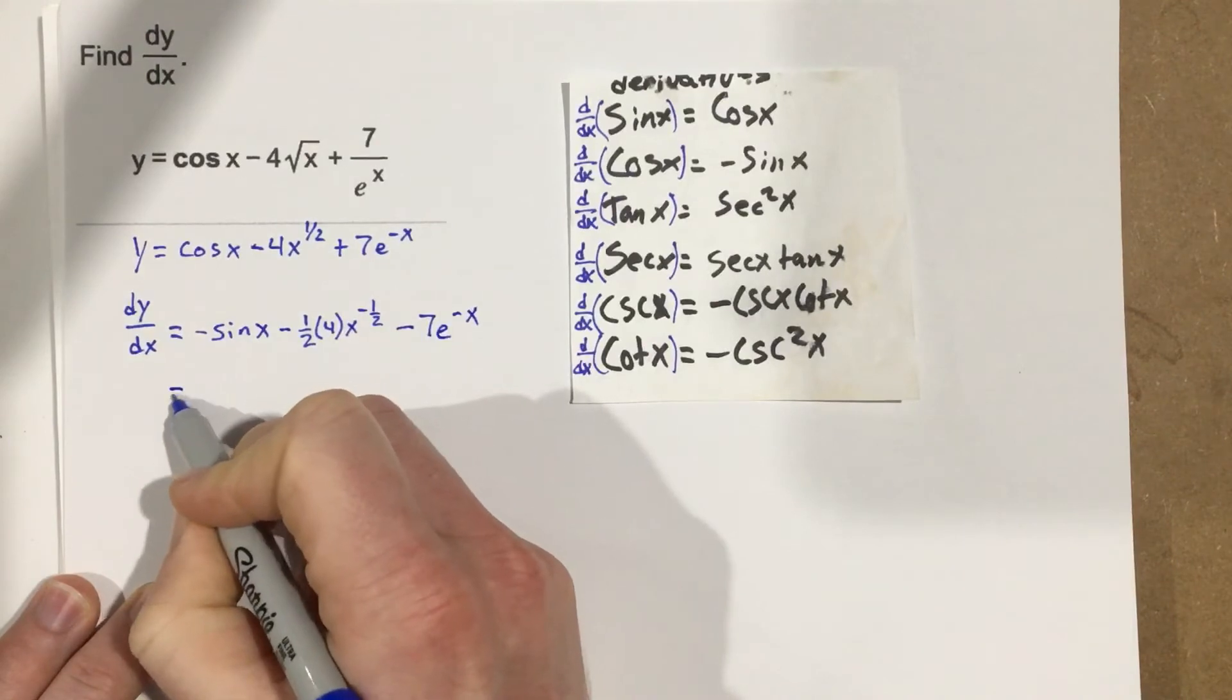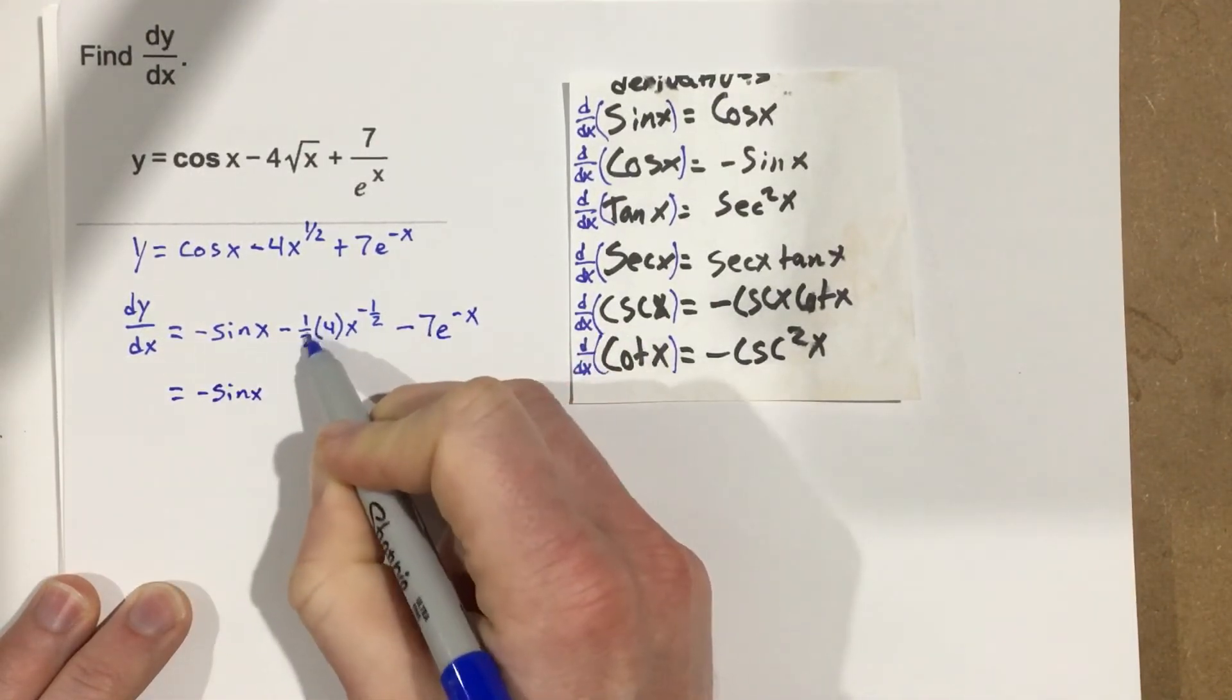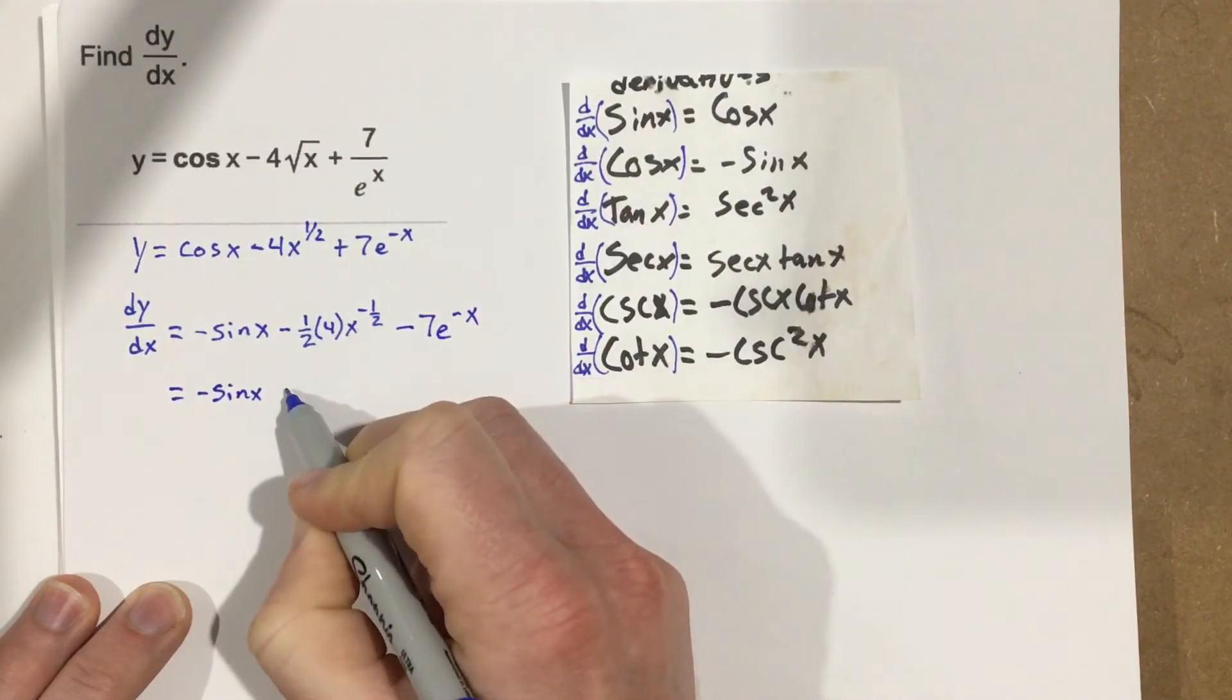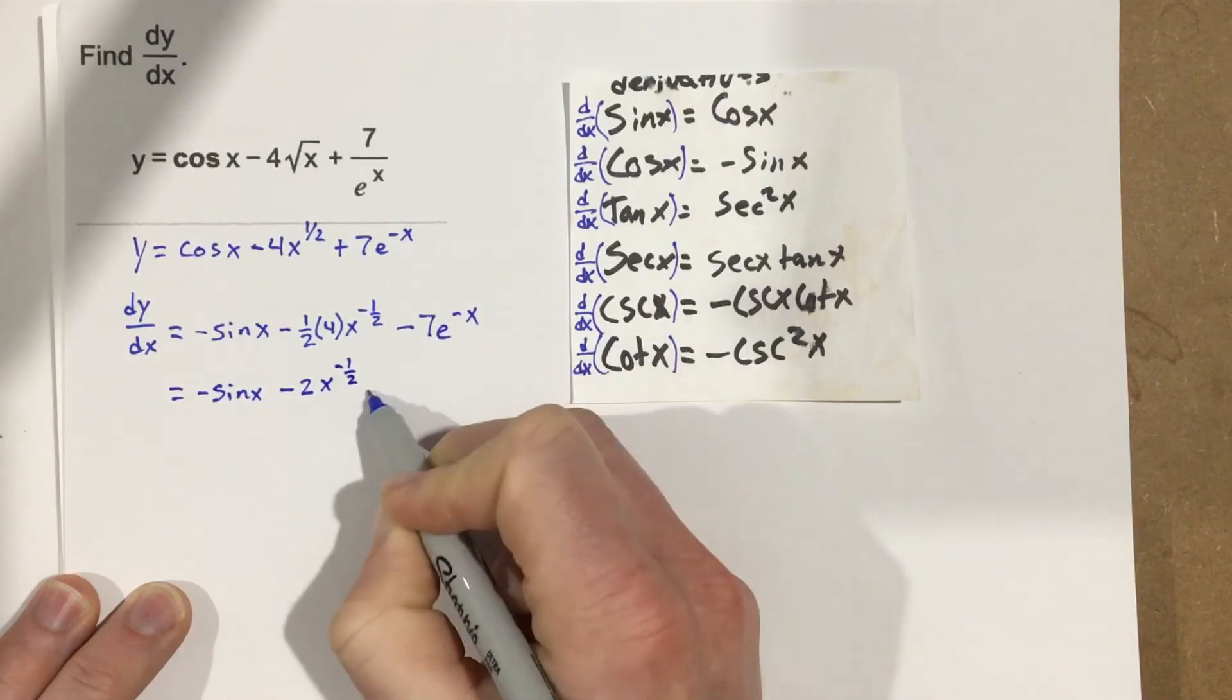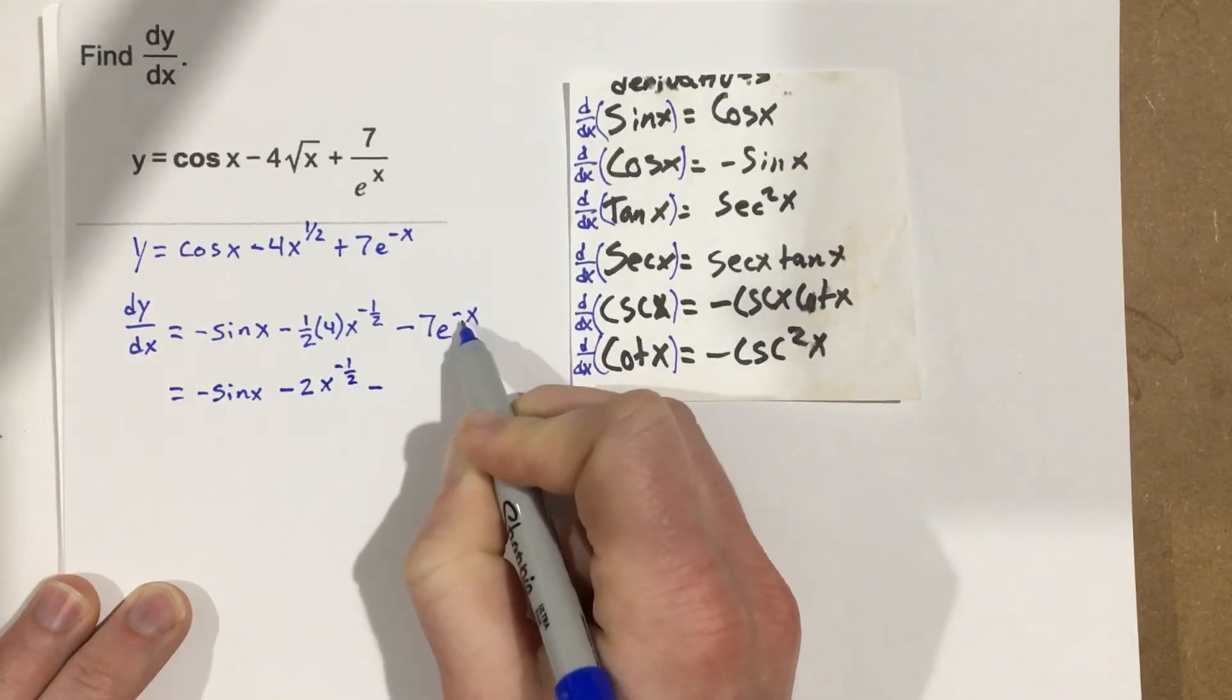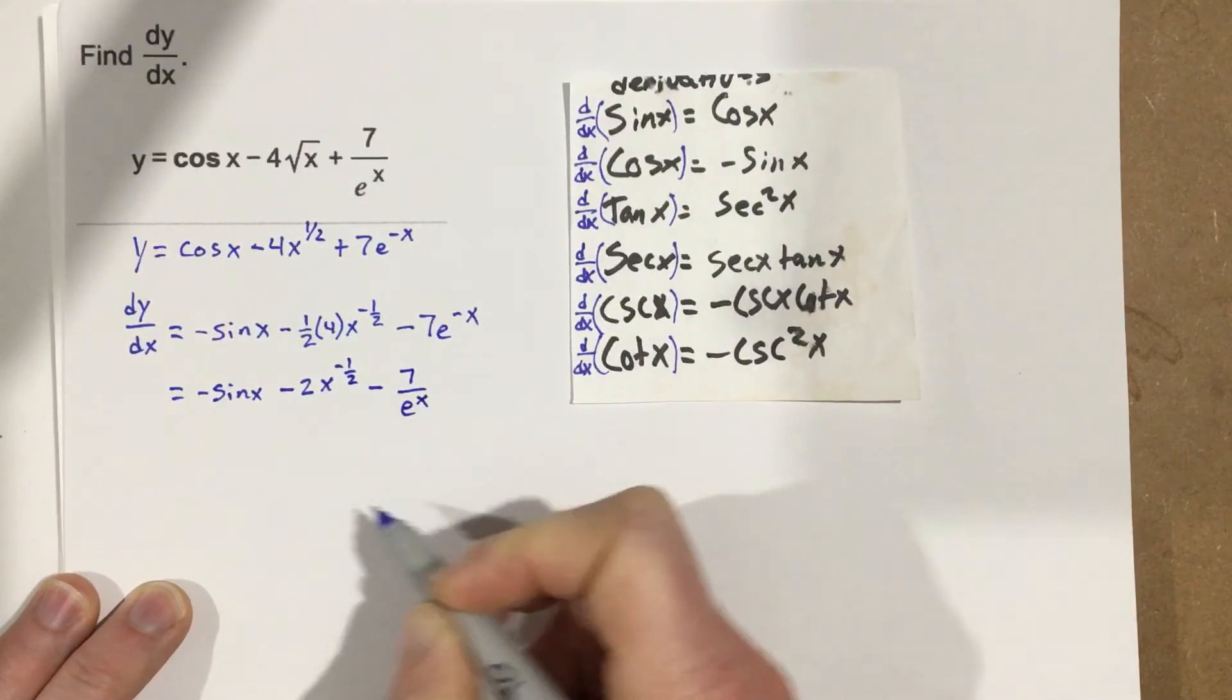So now I can simplify and say that negative sine x, negative 1 half times 4, that's going to be negative 2x to the negative half. Minus, I can bring this power back down to the bottom, so minus 7 over e to the x.